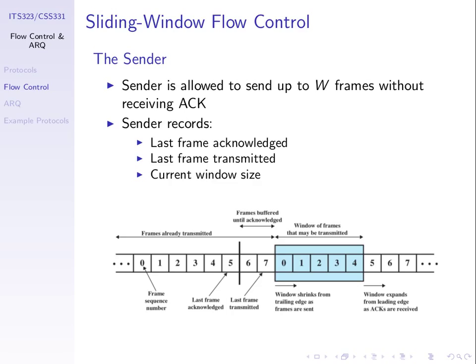Because we're allowed to send up to W frames, if W is 7 and I've sent 3, I'm allowed to send 4 more. If I've sent 2, I'm allowed to send 5 more. The number more that we're allowed to send is called the current window size. So we have a maximum window size W and a current window size — variables that the sender keeps track of whose values change over time. To see how the protocol works, we'll draw them on a picture.